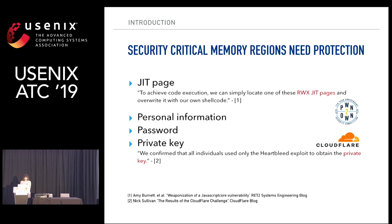First, I want to emphasize that some memory spaces need protection. Writable and executable JIT pages are one common target to achieve remote code execution in JavaScript engines. For example, one Pwn2Own winner explained they achieved code execution by injecting shellcode into JIT pages. Second, personal information such as passwords and private keys are also common targets and should be protected. The Cloudflare challenges show that a private key in a cloud service can be easily leaked by the Heartbleed attack.